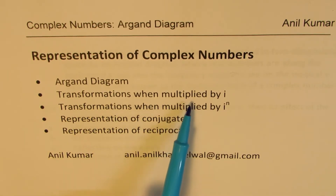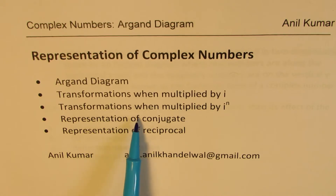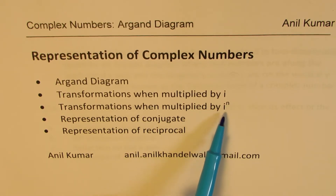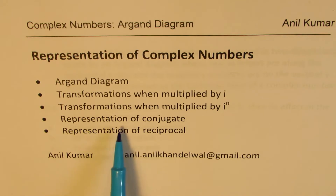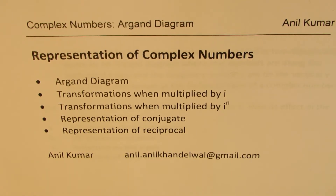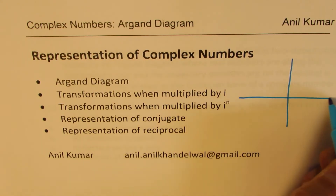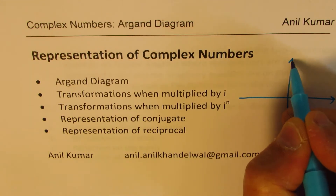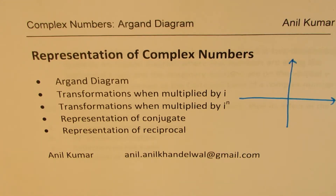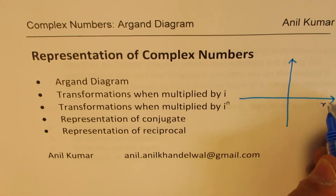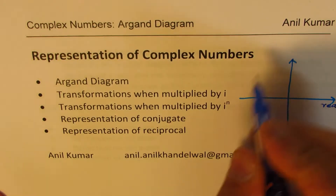We'll see transformations when multiplied by i, transformations when multiplied by powers of i, the pure imaginary number, how to represent conjugates and reciprocals on a plane. Just to give you an idea of what we're talking about, we could represent complex numbers on a Cartesian plane, where the horizontal x-axis takes care of the real numbers — this becomes the real part — and this is the imaginary part.